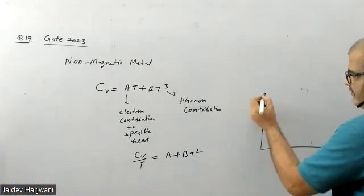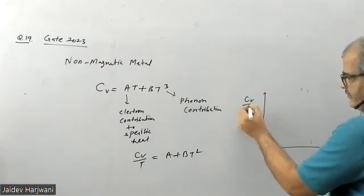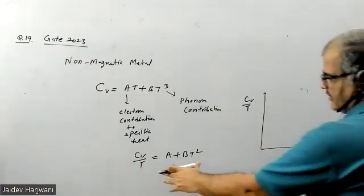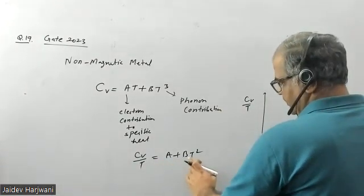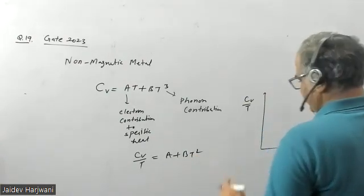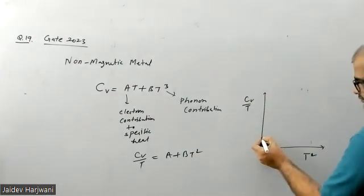Specific heat divided by temperature with respect to T square, then this is an equation of straight line. At T equals zero, this will be your A, so it will start from here.